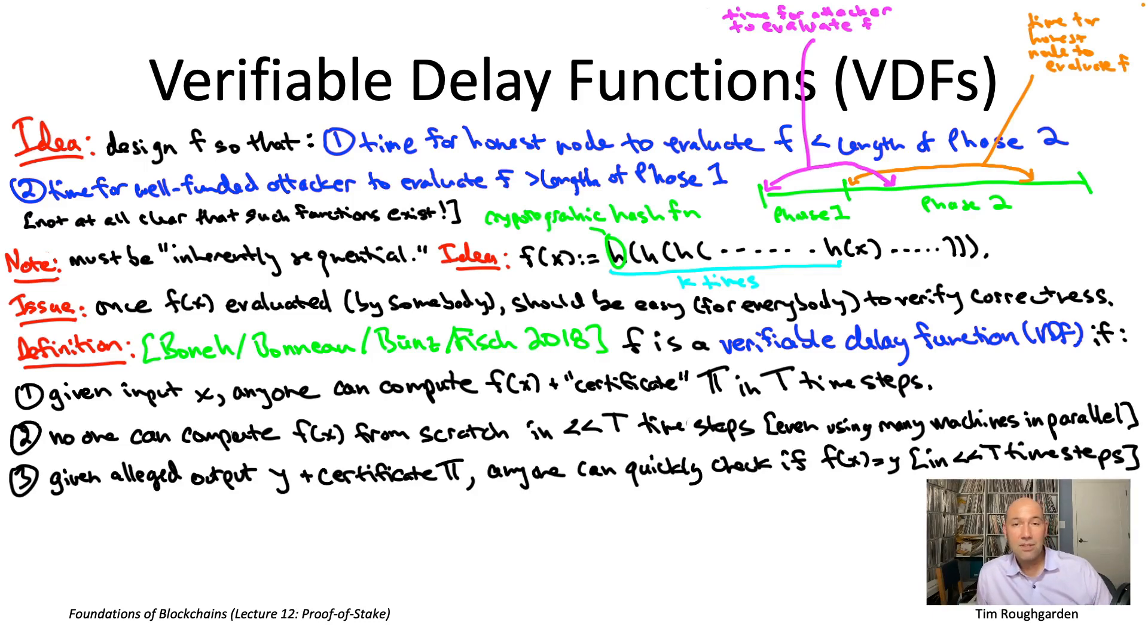So for the one candidate we discussed iterating a cryptographic hash function over and over again, we talked through why that clearly has the first property here, why intuitively it would seem to have the second property as well, why it's sort of inherently sequential. But what about that third property?